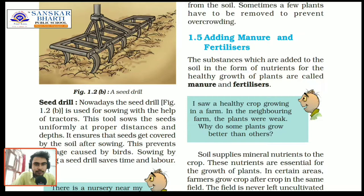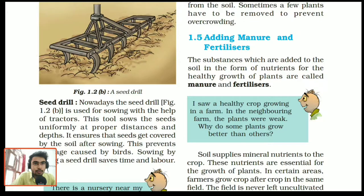The next topic is adding manures and fertilizers. Manure and fertilizers are added to the soil in the form of nutrients for healthy growth of the plant. What manures and fertilizers do is replenish the soil. The soil has all essential nutrients which plants use for their growth, but after a continuous cropping period, the soil gets malnourished and the quantity of nutrients decreases.